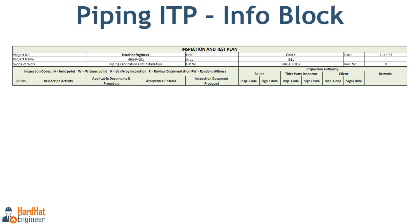The first thing you have to look at in any ITP is the information block. In this area you can see the project details, including information such as project name, project number, and client details. The scope of work clearly defines what is being inspected or tested, material types such as SS or CS, and other equipment or systems involved. It also mentions things like ITP number, revision number, and area and unit if it is specific to a certain part of the project.